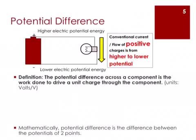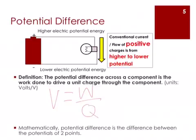A voltmeter can be used to measure the EMF for the source, such as a dry cell. When a dry cell is connected to a light bulb, the bulb converts the electrical energy provided by the dry cell to light and thermal energy. For each coulomb of charge passing through the light bulb, the amount of electrical energy converted to other forms of energy is called potential difference. The potential difference across a component is the work done to drive a unit charge through the component.